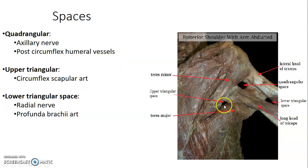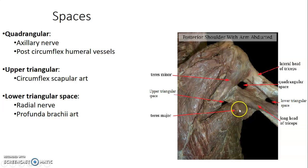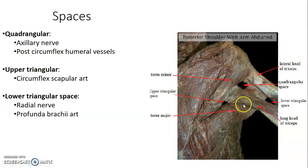Now we go to the upper triangular space. A triangle has three parts, so: teres minor above, teres major below, and the long head of triceps. Those are the boundaries of the upper triangular space. It mainly contains the circumflex scapular artery, which is a branch of the subscapular artery.